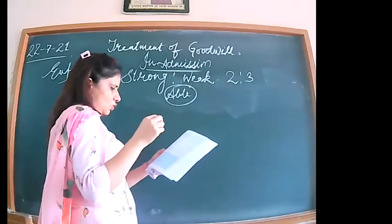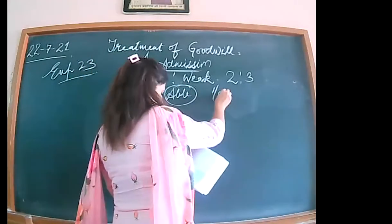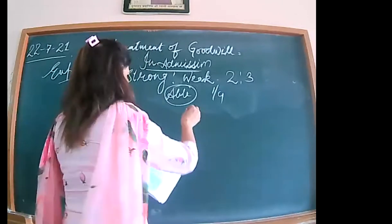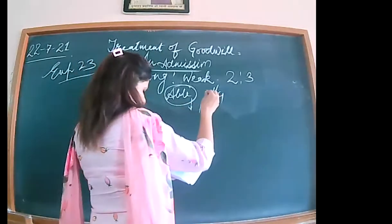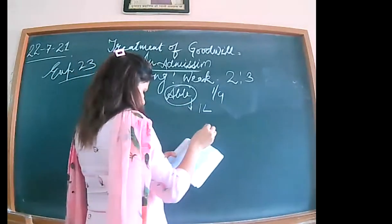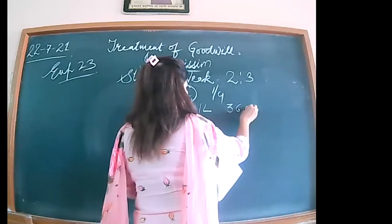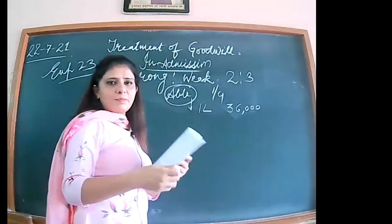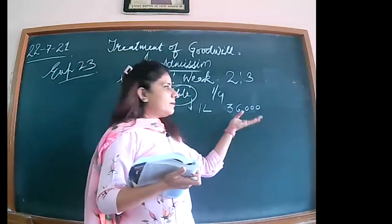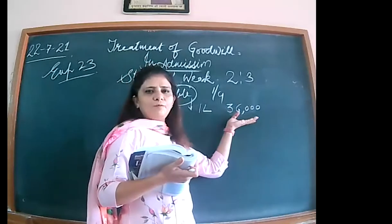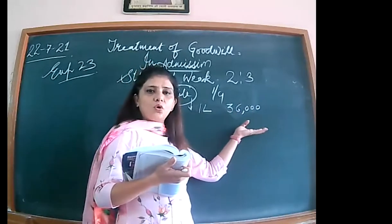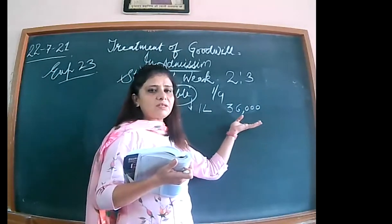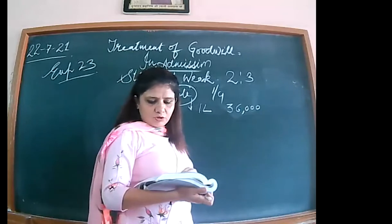Abel is taking one-fourth share. Abel brought one lakh for his capital and thirty thousand as his share of goodwill. He himself is giving his share of goodwill, so we are not going to reduce anything.